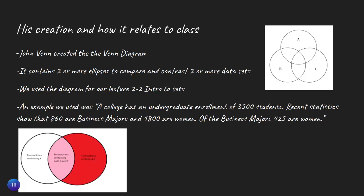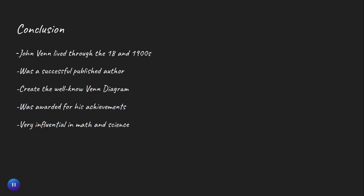In conclusion, John Venn lived through the 1800s and 1900s — the Romantic era. He was a successful author and publisher. He created the Venn diagram that we use today. He was very influential in math and science and he was awarded for all of his achievements. Here's my work cited. Thank you, and have a good day.